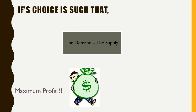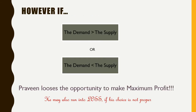If Praveen's choice is such that the demand meets the supply, then he is going to walk away with the maximum profit. However, if the demand is greater than the supply, or the demand is less than the supply, then Praveen loses the opportunity to make the maximum profit. In fact, he may also run into loss if his choice is not proper.